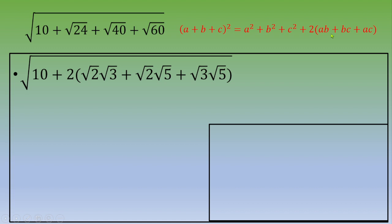Once you have this form, you can recognize the remarkable identity: (A+B+C)² = A²+B²+C² + 2(AB+BC+AC). Let's see if we can match this. Let A equal square root of 2, B equal square root of 3, and C equal square root of 5. We already have AB, BC, and AC inside the expression.